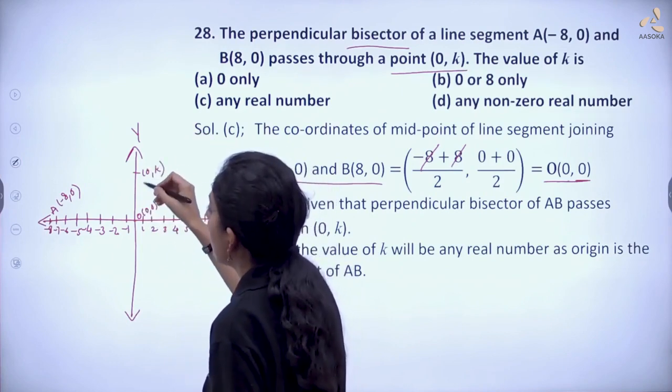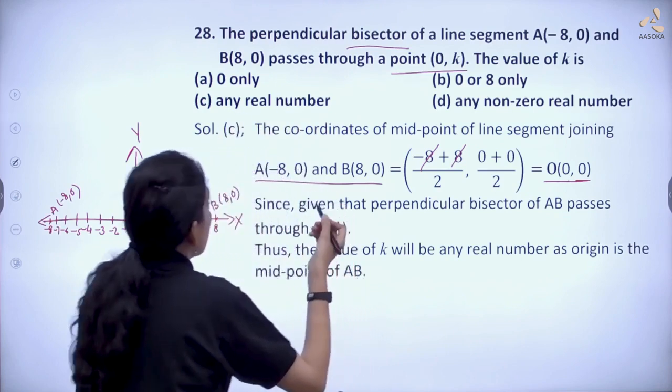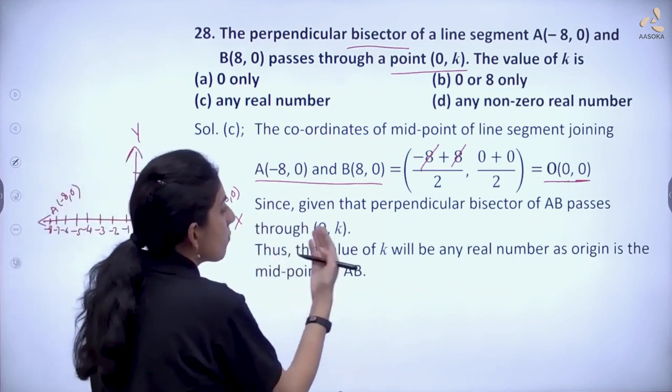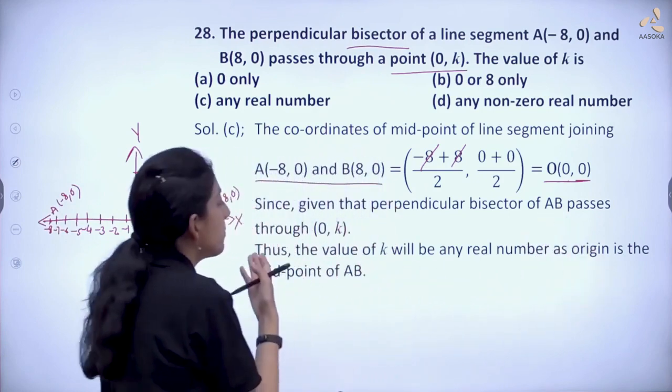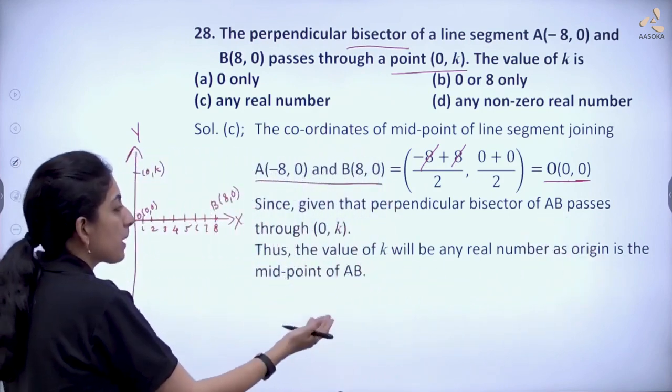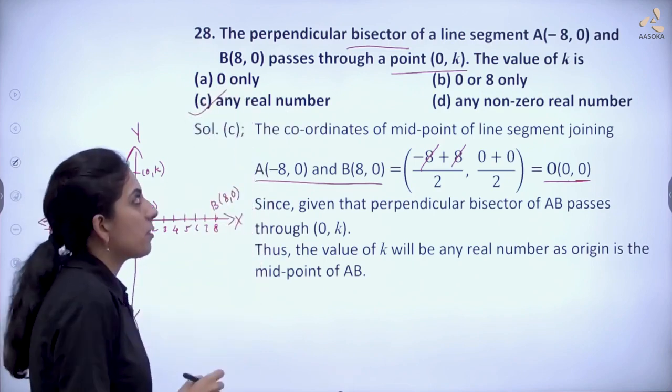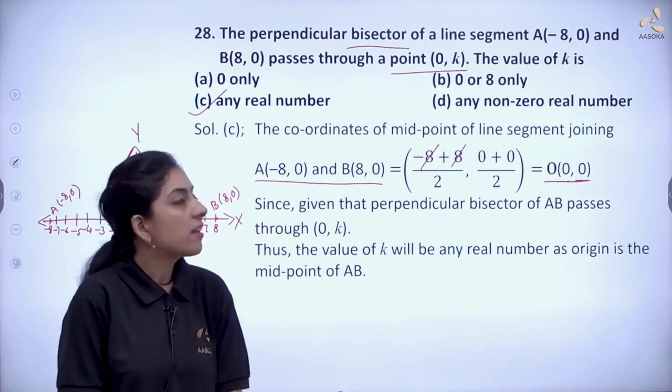It can be 1, 2, 3, 4, 5, 6, 7, 8—any real number. So it can take the value of any real number. Hence, thus the value of k will be any real number as the origin is the midpoint of AB. So any real number is option C. Hence C is the correct option. Thank you.